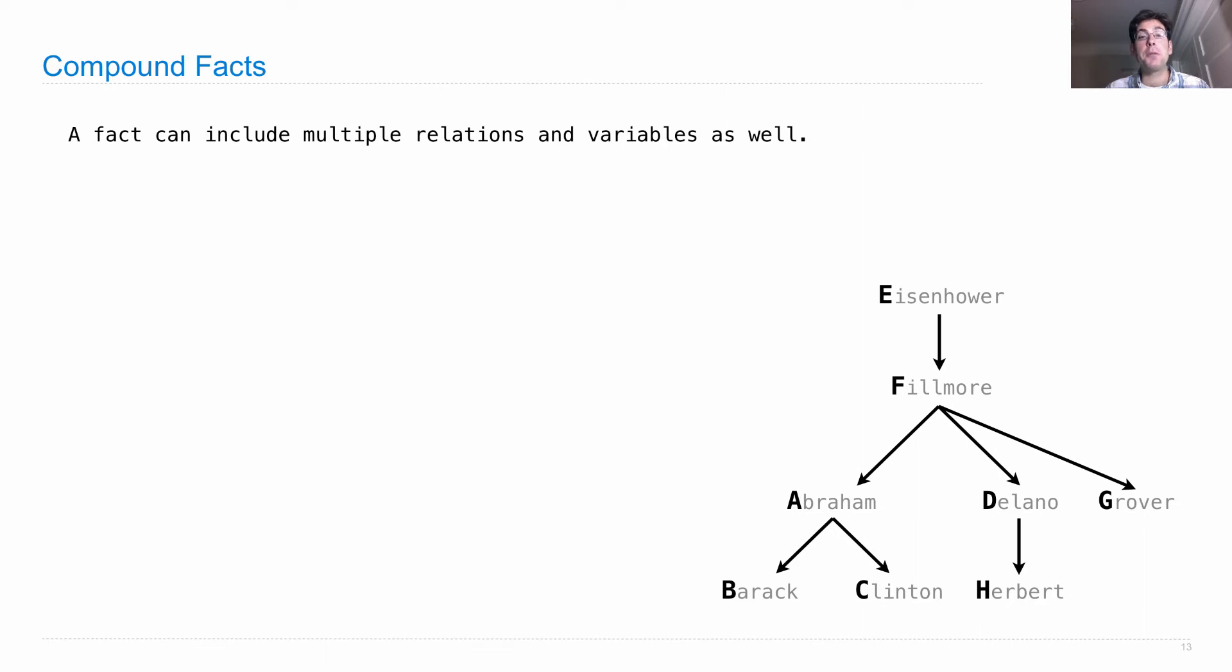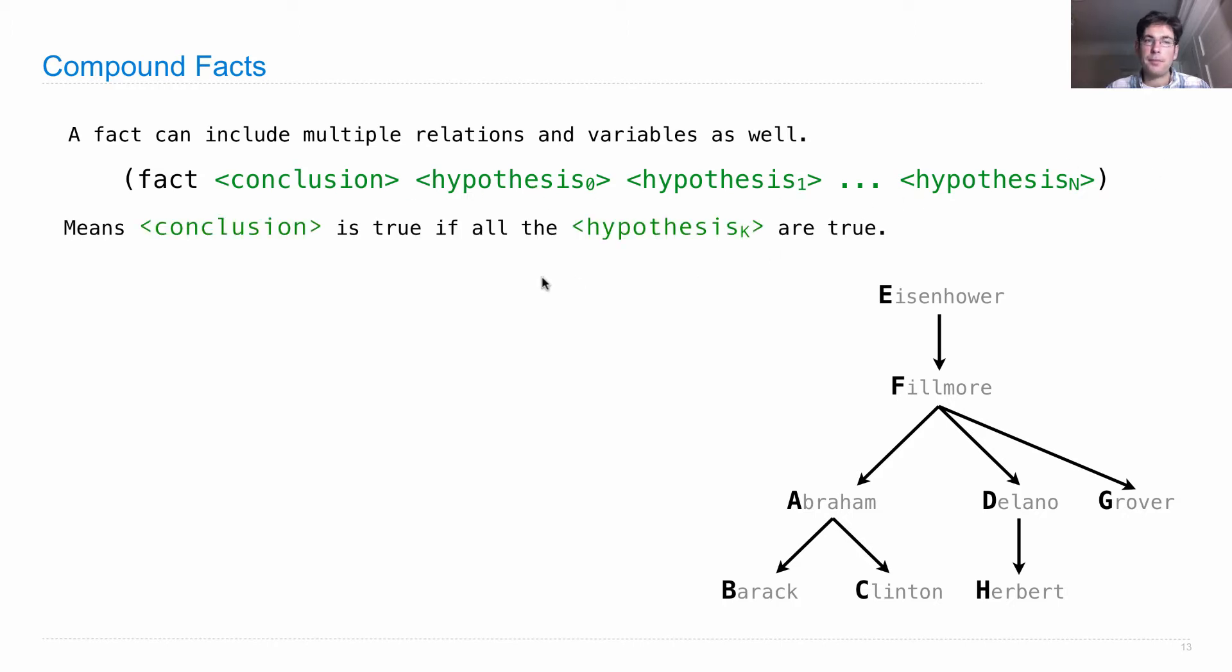A fact can include multiple relations and variables. A fact in its general form says fact, and then says a conclusion, and then zero or more hypotheses. So far, every fact we've looked at had just a conclusion. But conclusion and hypotheses are related in the following way: if you have a fact with multiple things, then it means the conclusion is true if all the hypotheses are true.